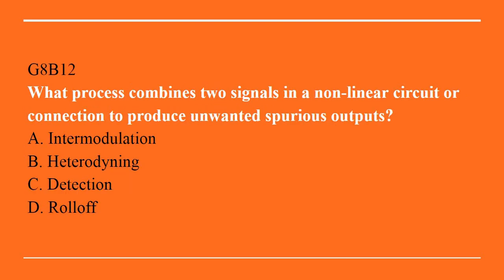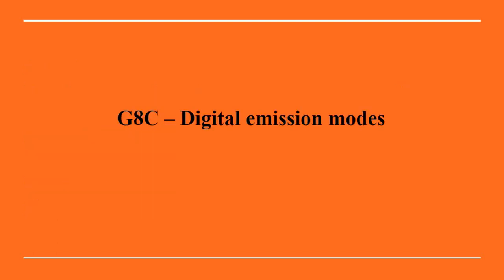G8B12: What process combines two signals in a non-linear circuit or connection to produce unwanted spurious outputs? A. Intermodulation. B. Heterodyning. C. Detection. D. Roll-off. Answer is A. Intermodulation.